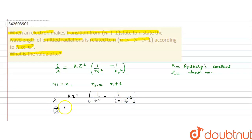Now, if we take the LCM, that will be n square into n plus 1 whole square. This gives us n plus 1 whole square minus n square.